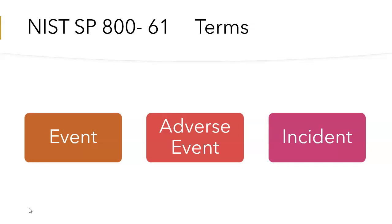When talking about incidents, we need to understand some key terms: events, adverse events, and incidents. An event is any observable occurrence in a system or network — for example, a login activity or copying a file from one system to another. An adverse event means events with negative consequences, like a server crash or a portal application not responding.